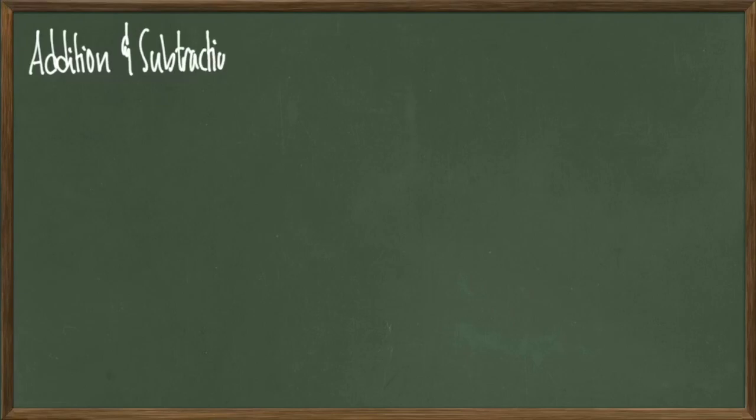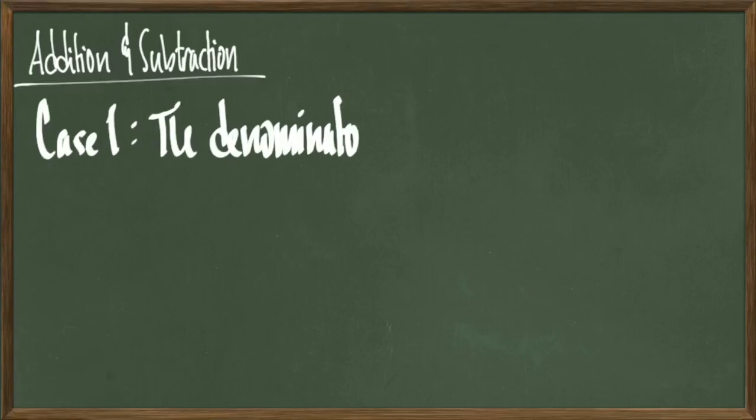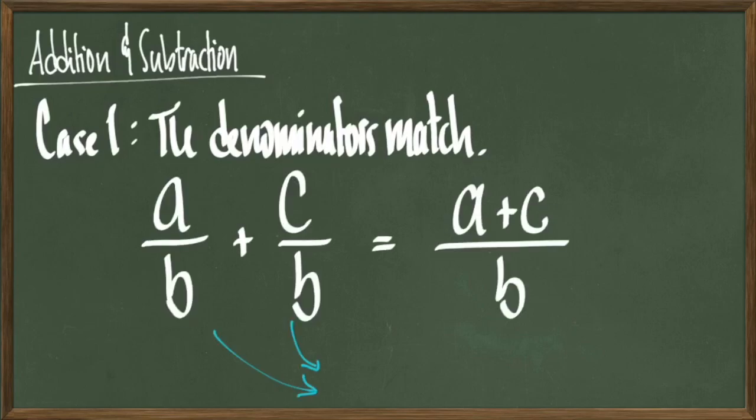Now let's talk about fractional addition and subtraction. We essentially get two cases. In the first case, we look at when the denominators of our different fractions match. We call these common denominators. So, when a over b plus c over b have common denominators, we keep the denominator the same and then add the entries in the top to get a plus c over b.